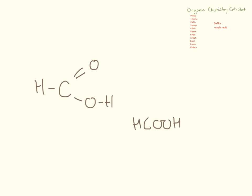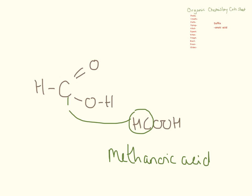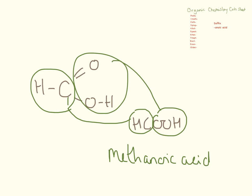There are three carboxylic acids that you need to know for your GCSE. The first one has one carbon, so it is methanoic acid. The formula is written as it's drawn — the CH group here corresponds to the CH group in the structure, and the OOH corresponds to the OOH here.